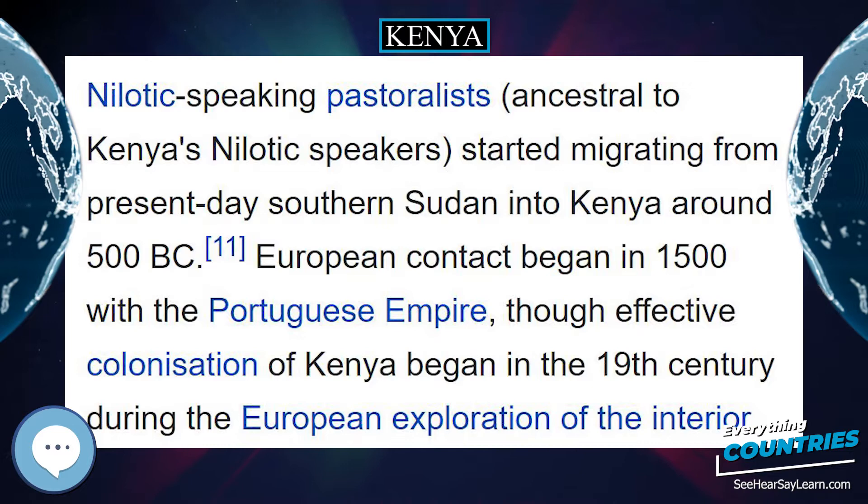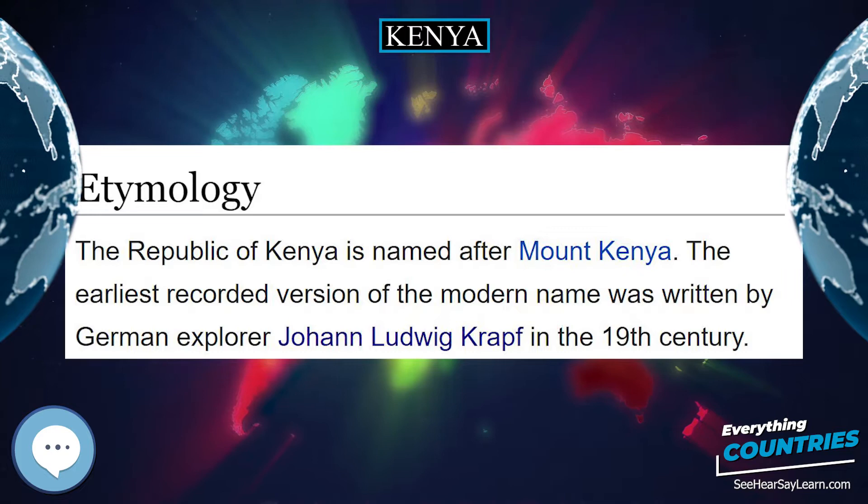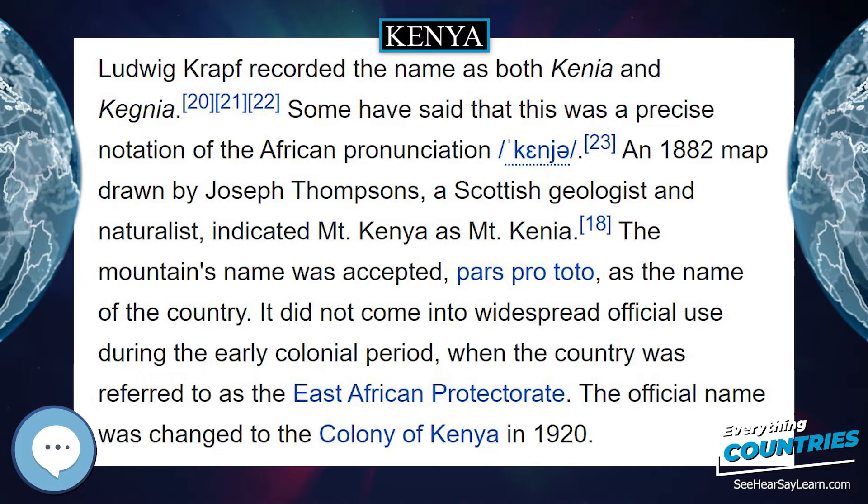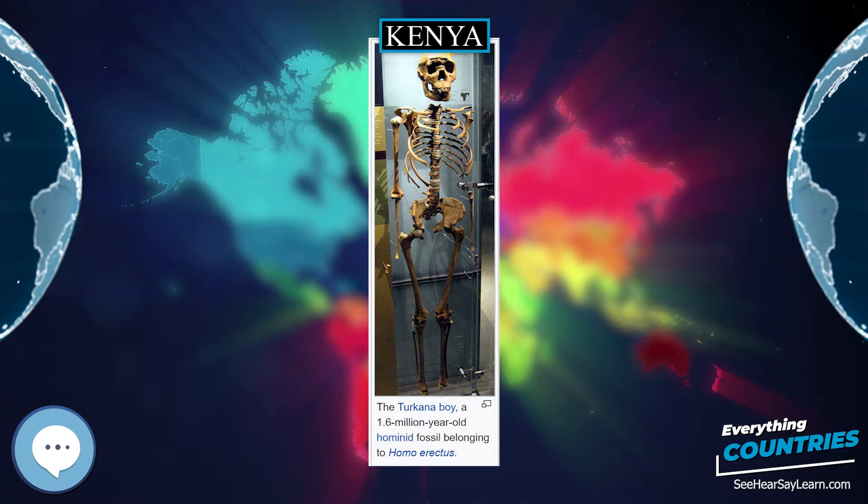During the railway construction era, there was a significant inflow of Indian people who provided the bulk of the skilled manpower required for construction. They and most of their descendants later remained in Kenya and formed the core of several distinct Indian communities such as the Ismaili Muslim and Sikh communities. While building the railway through Tsavo, a number of Indian railway workers and local African laborers were attacked by two lions known as the Tsavo Man-Eaters. At the outbreak of World War One in August 1914,